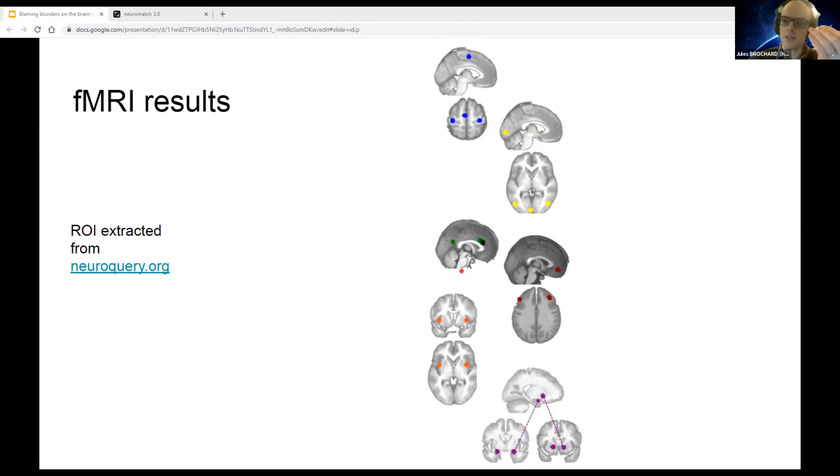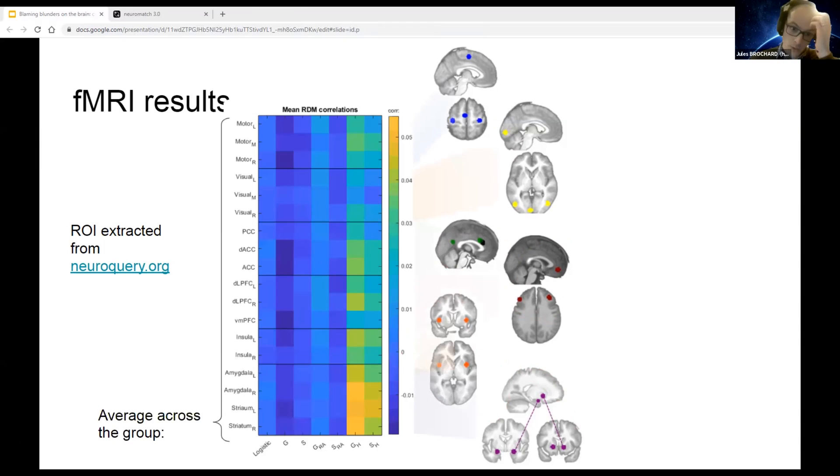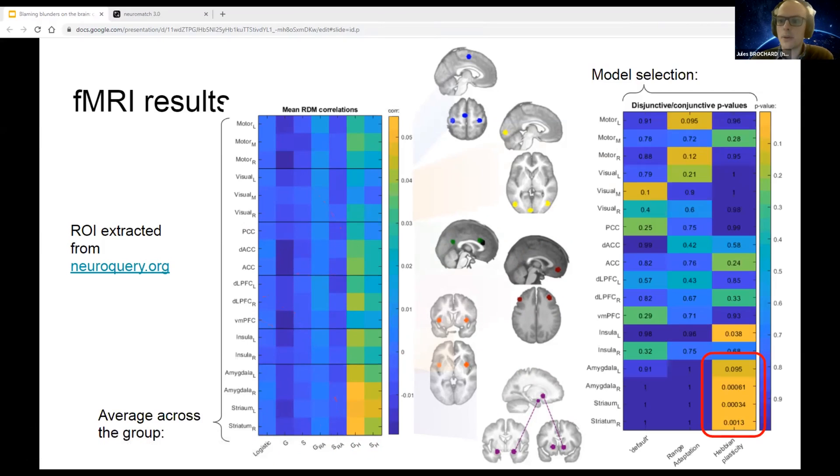We compared them to the similarity matrix of the network doing the same task as the subject and answering the same way. What we found was that only the Hebbian network managed to relate to brain activity, not range adaptation network and not logistic or static network. We also devised a model selection technique to statistically assess that such regions behave in a Hebbian way.